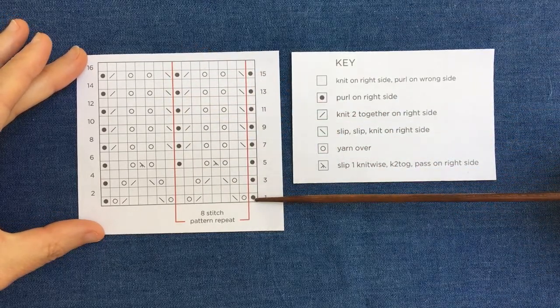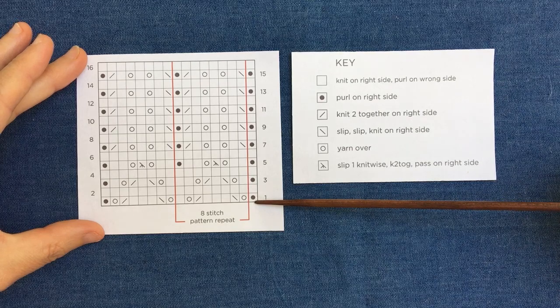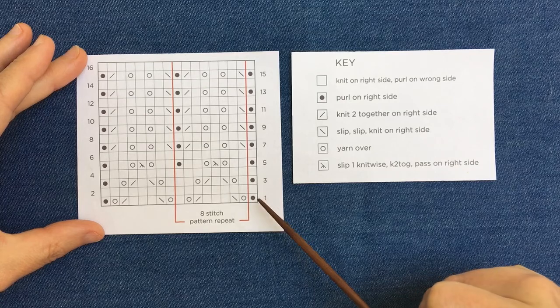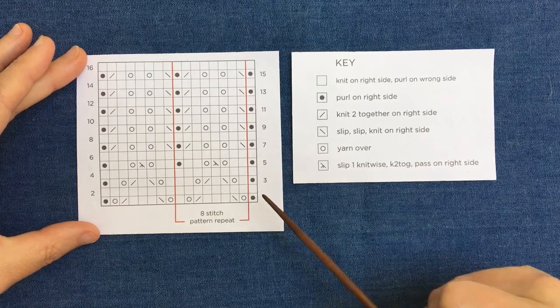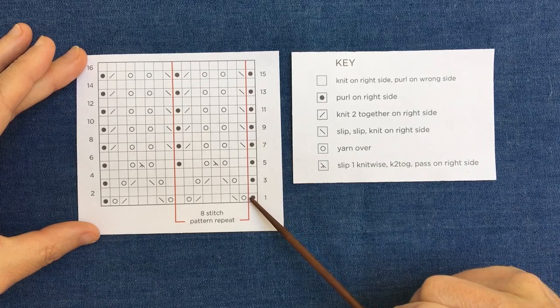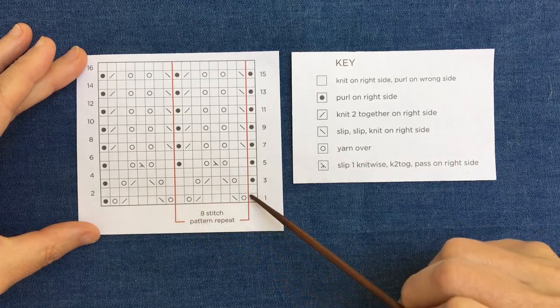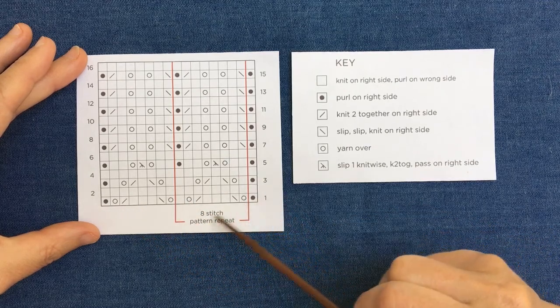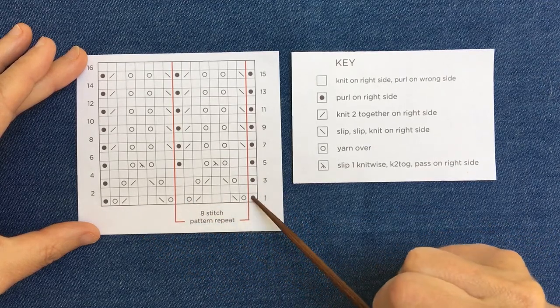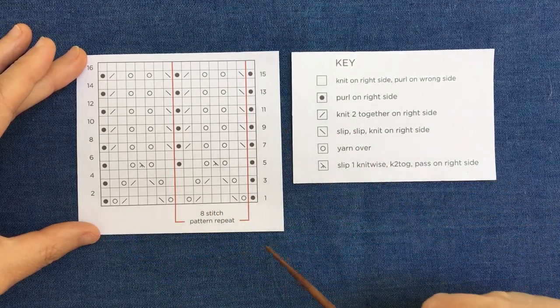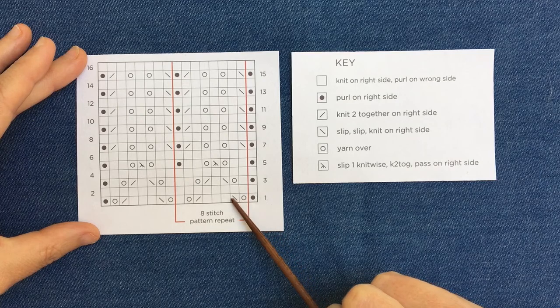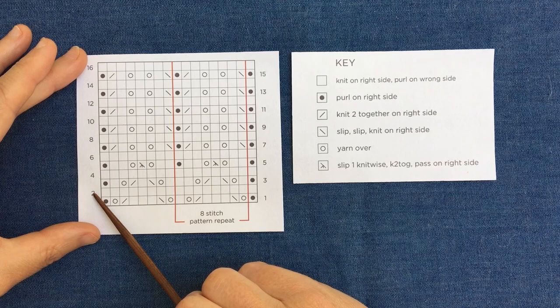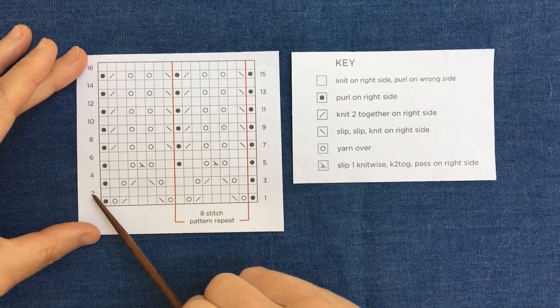The chart always begins at the bottom right hand corner and you'll see the number one here, so that shows us it's the beginning of our row. Right side facing, you will read the odd numbers, so you work your way along this row. Each square represents a stitch, so for this stitch combination it's an eight stitch pattern repeat and then that's just repeated along your row depending on how many stitches you have. So you begin here and you work your way along to the end, and then on the way back, because we're knitting back and forth and not in the round, you'll be on the wrong side which is the even number.